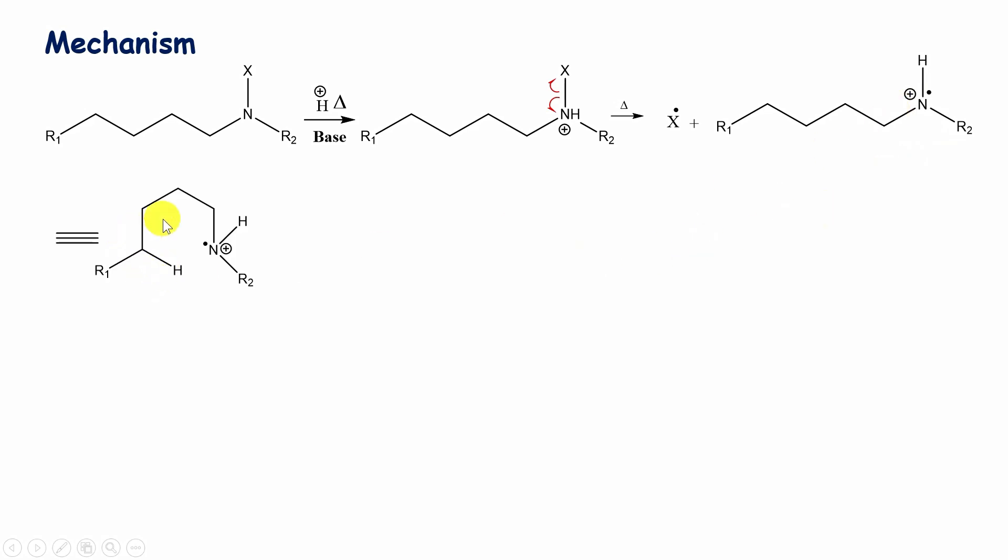This radical ion can be represented like this. 1,5 hydrogen shift takes place. This hydrogen shifts from this carbon atom to this nitrogen. It is regarded as a 1,5 hydrogen shift, thereby forming this radical cation. This carbon becomes radical.